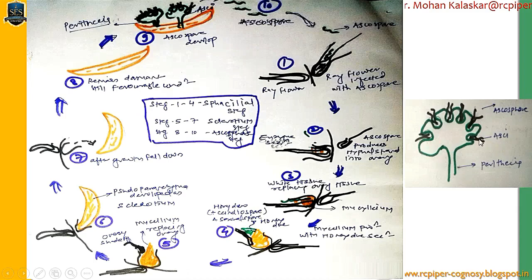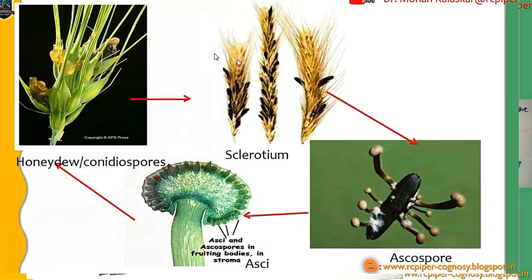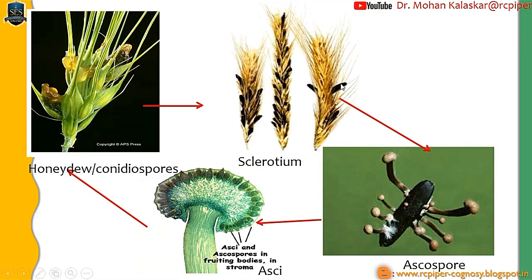This is a Perithecia, which contains a pocket-like structure — that is the Ascai — and this Ascai contains the Ascospores. These Ascospores are very minute filamentous structures ready to contaminate. In the first stage, the fully grown Sclerotium is present; when they get favorable conditions, they produce Perithecia with Ascai. The Ascospore settles at the base of the ovary and develops pseudoparenchymatous cells, producing a sugary solution. This sugary solution also contains the rounded conidia spores, which are also responsible for producing an infection. This is the life cycle of Ergot.